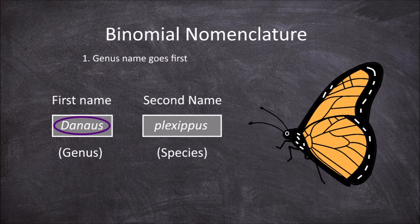The second rule is that the genus name is always capitalised. In our example, the genus name Danaus is going to be capitalised — it would never be left starting with a lowercase d.